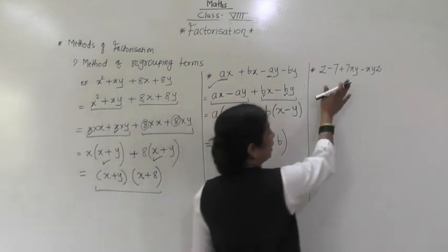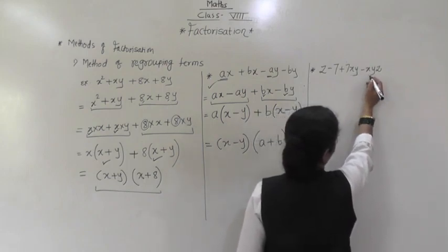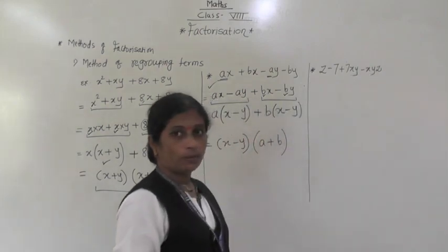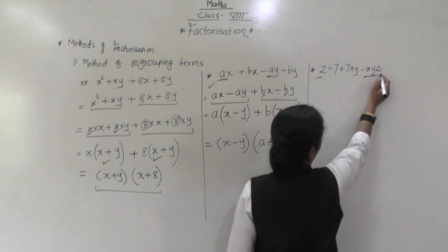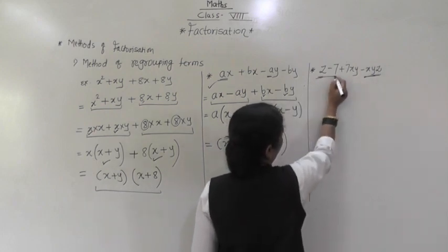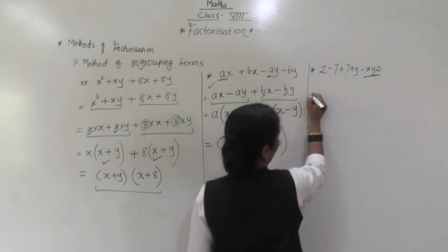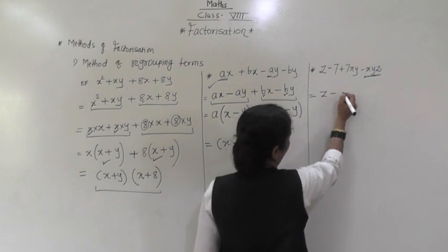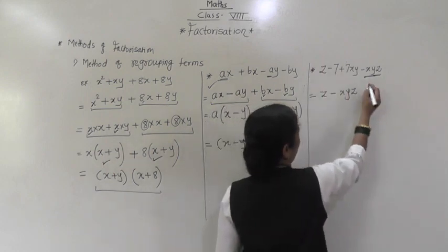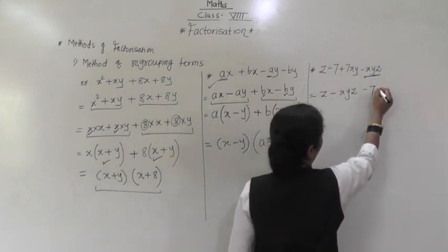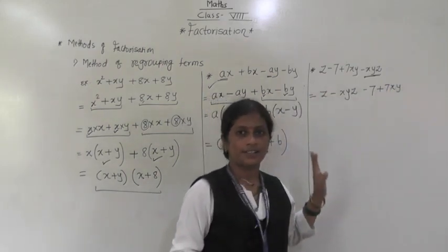Next example: z - 7 + 7xy + xyz. We will rearrange: z - xyz - 7 + 7xy. Just rearranging the terms. There are 4 terms, so make groups of 2 each.